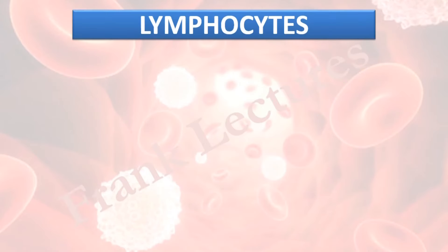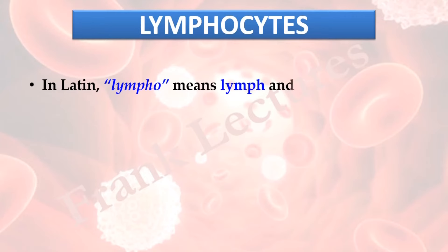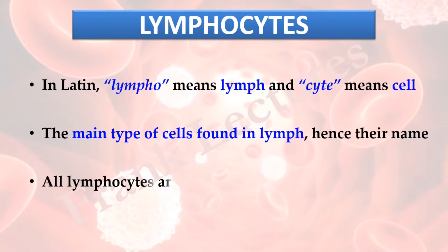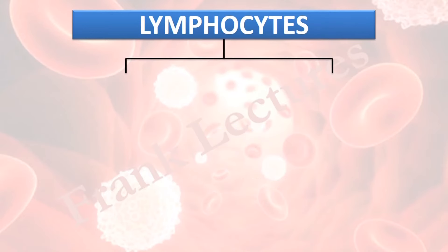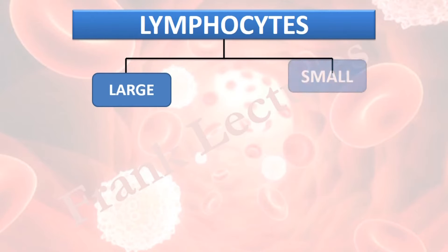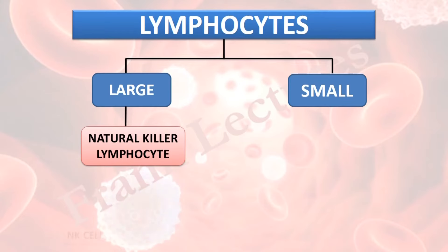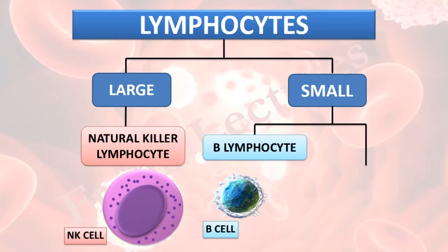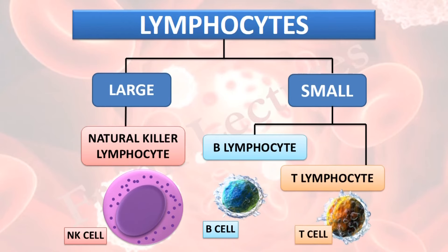Let us now study lymphocytes. In Latin, 'lympho' means lymph and 'cyte' means cell. Lymphocytes are the group of leukocytes that are the main type of cells found in lymph, hence their name. All lymphocytes arise in bone marrow. Lymphocytes have been divided into two groups based on their morphology: large and small. Large lymphocytes include natural killer cells; small lymphocytes include B lymphocytes (B cells) and T lymphocytes (T cells).